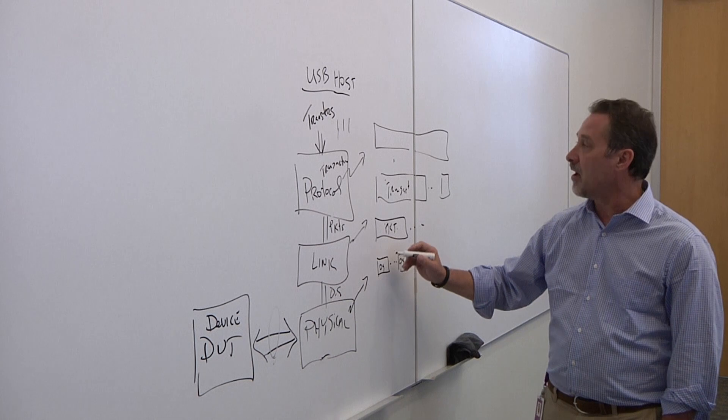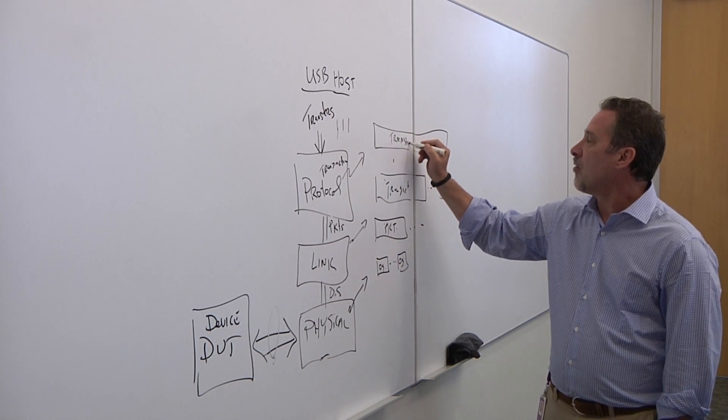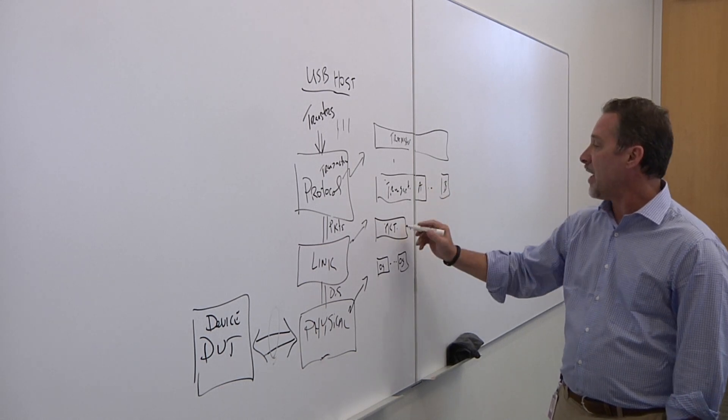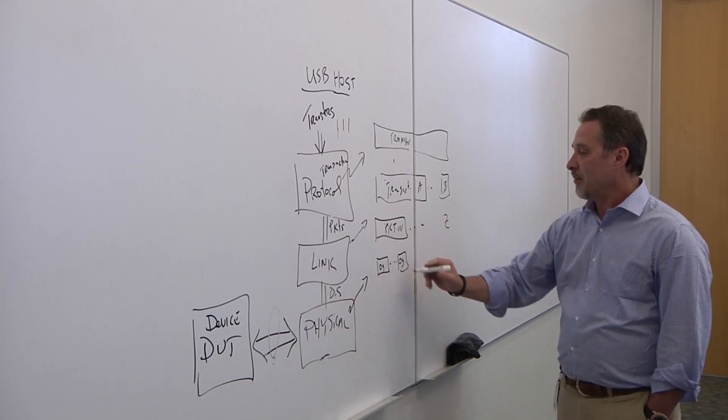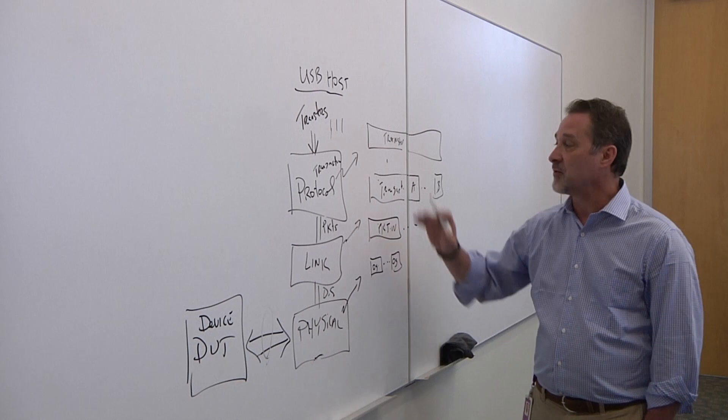When you do debug, I want to know for this transfer up here, which transactions, transactions A and B, and packets W through Z made up with these ordered sets, because things can be out of order as you go down the stack.